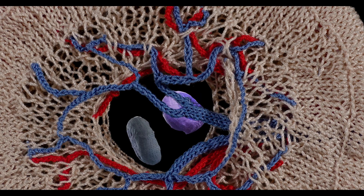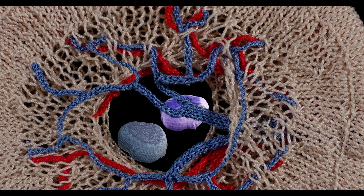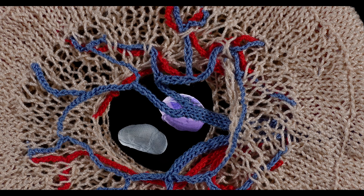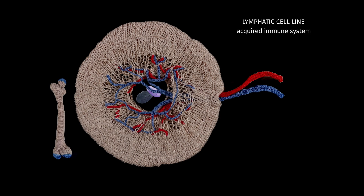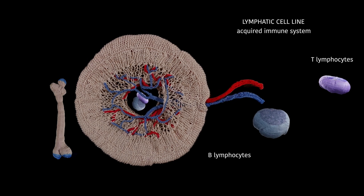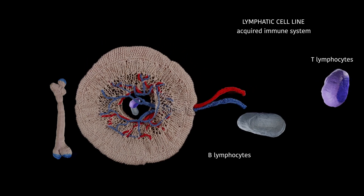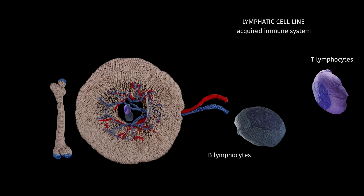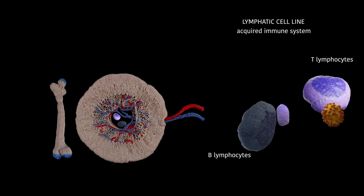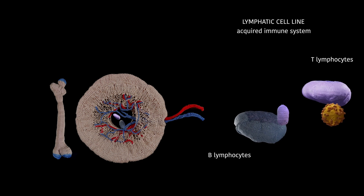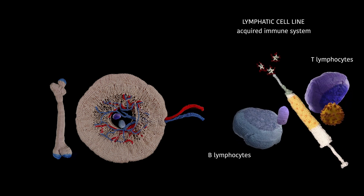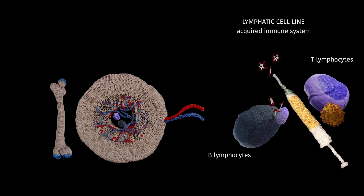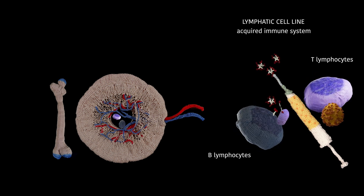The lymphoid cell lineage gives rise to various lymphocytes that form the acquired immune system. The most important among them are the B lymphocytes and the T lymphocytes. They undergo intensive training in the body and mature through contact with foreign bodies such as viruses or vaccinations. They develop a memory so they can react quickly in the event of the next contact with the same pathogen.